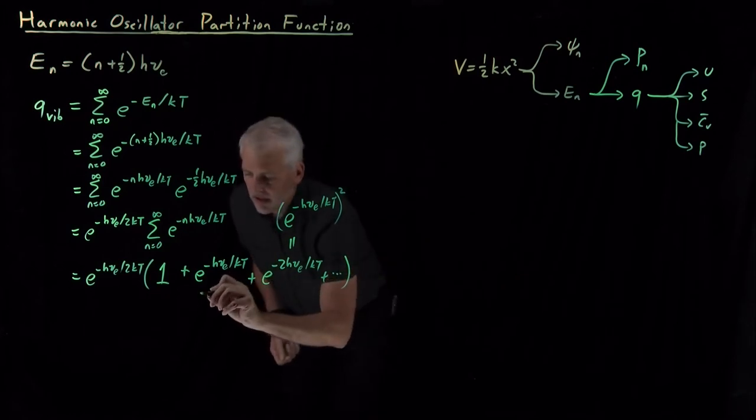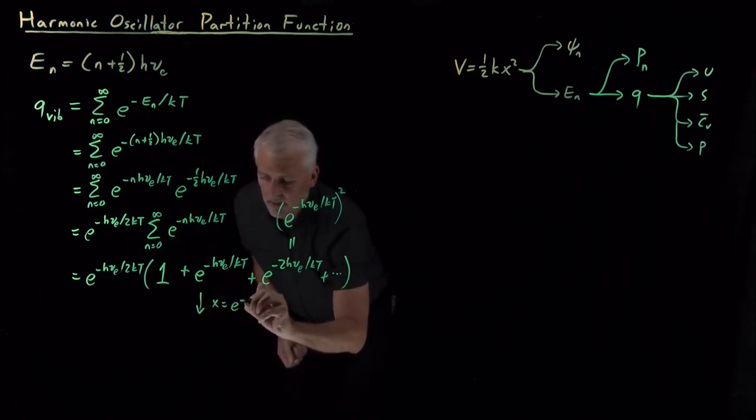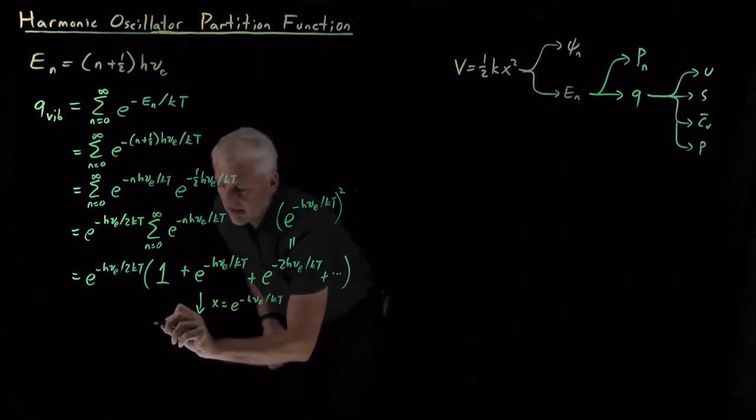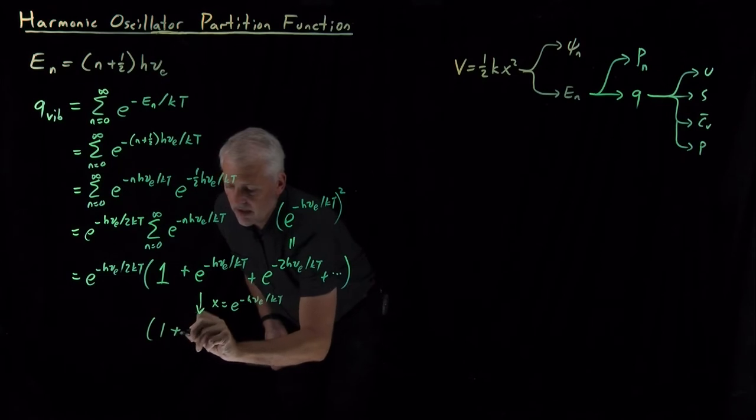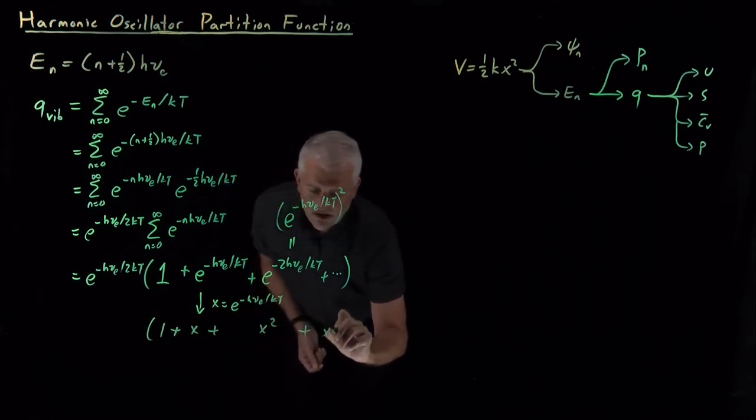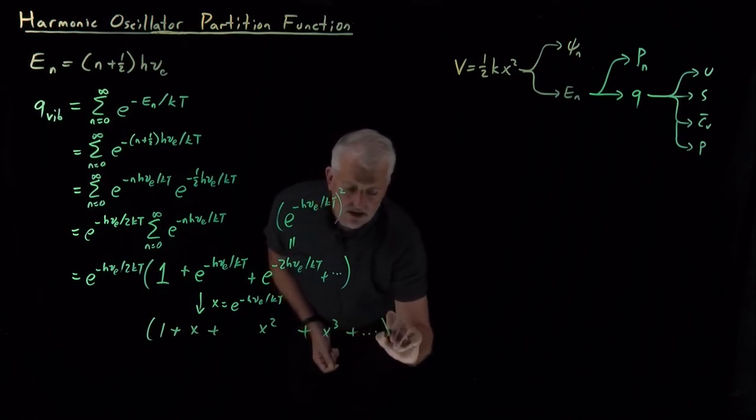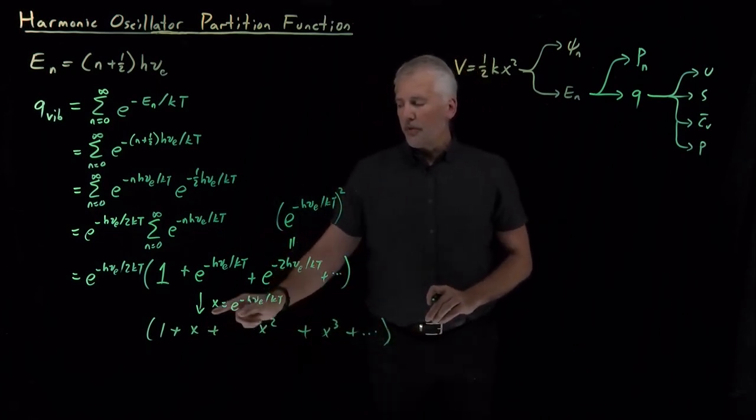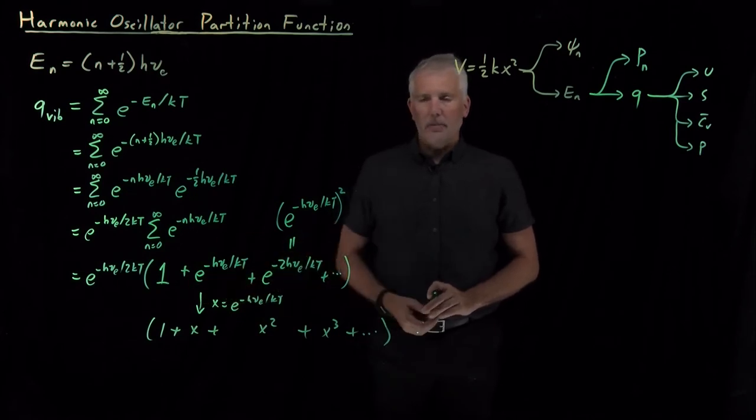If I say this is, if I rewrite this more simply, if I let x be e to the minus hν/kT, this looks like, term in parentheses, looks like 1 and an x and an x squared and an x cubed and so on. Or, I've just let x be short for this Boltzmann factor, e to the minus hν/kT.